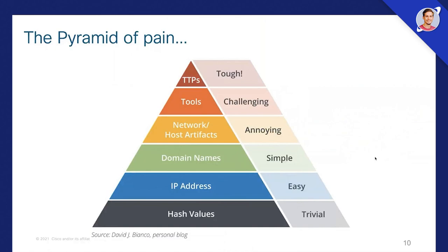This is also interesting — this is the Pyramid of Pain. If you Google 'pyramid of pain' and add cybersecurity, you'll find this pyramid. Basically, it talks about how you can hurt a hacker. At the bottom you see hash values and IP addresses.